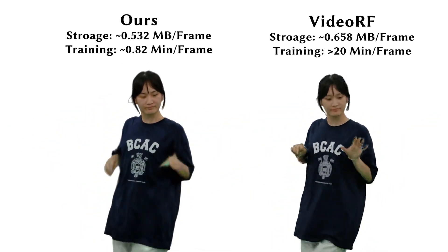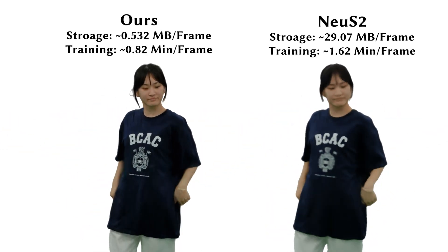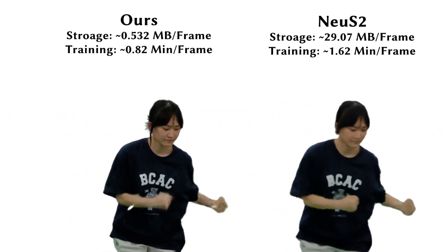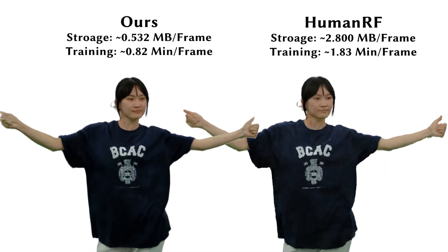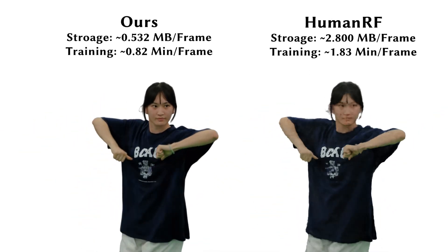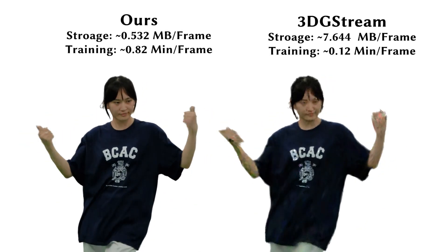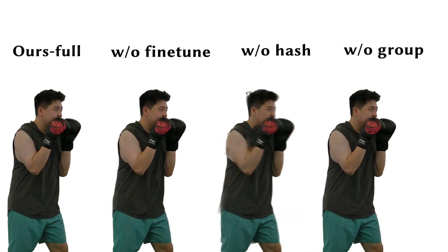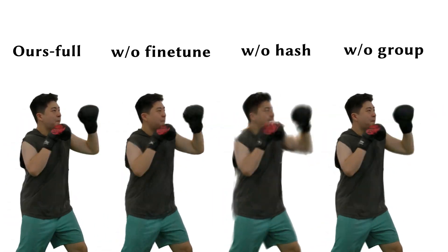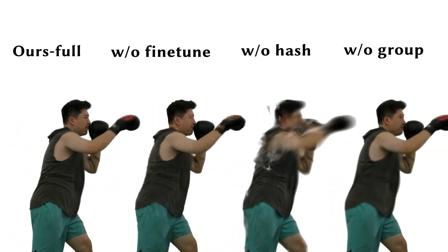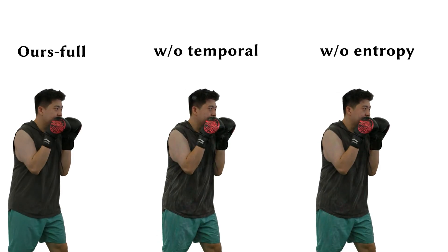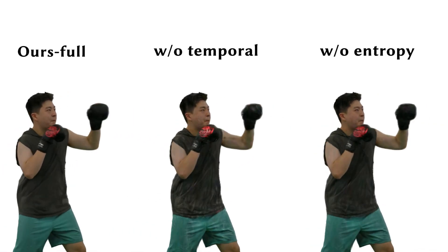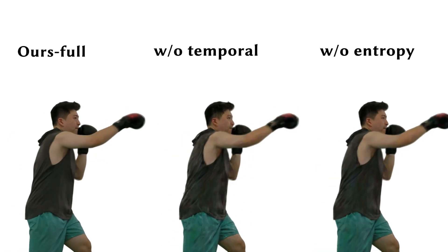Compared to neural voxel grid-based methods like VideoRF and Noose2, our approach reduces the impact of blur and fine textures. Although HumanRF can represent dynamic scenes, it struggles with reconstructing fine details. 3DGStream's dynamic reconstruction relies on a neural transformation cache for transformations between frames, resulting in poorer quality during large movements. We evaluated each module of our method, each with a storage size of approximately 500 kilobytes. Our full module achieved the best and most realistic rendering results, demonstrating that each module plays a crucial role in achieving high rendering quality.